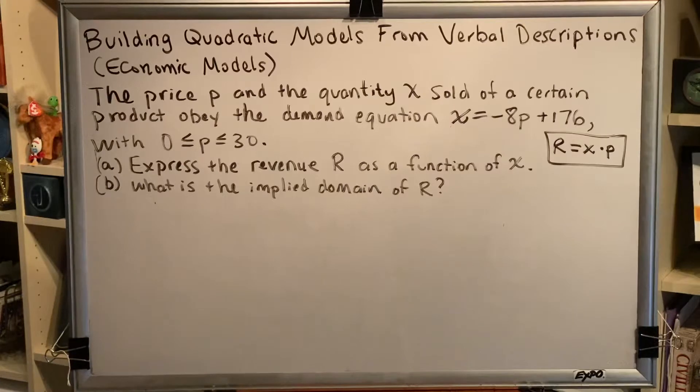The price p and the quantity x sold of a certain product obey the demand equation x = -8p + 176, with 0 ≤ p ≤ 30.